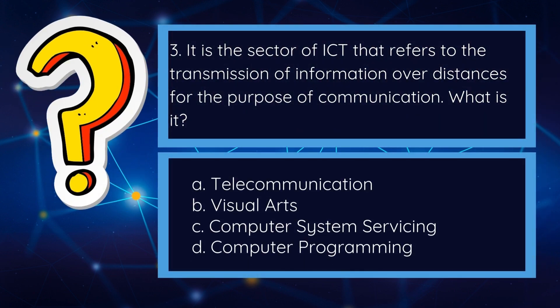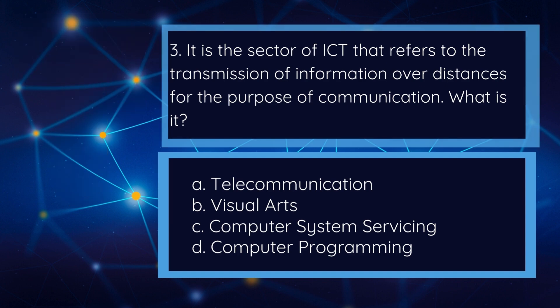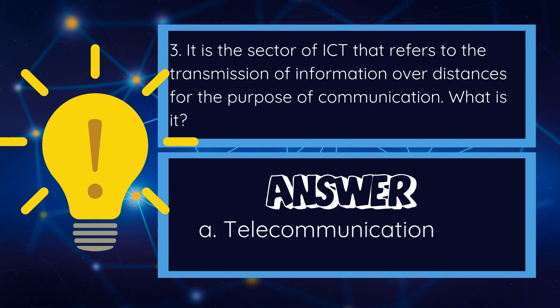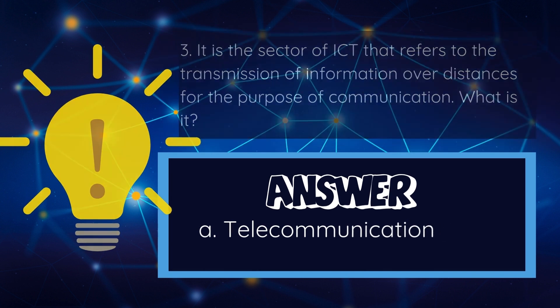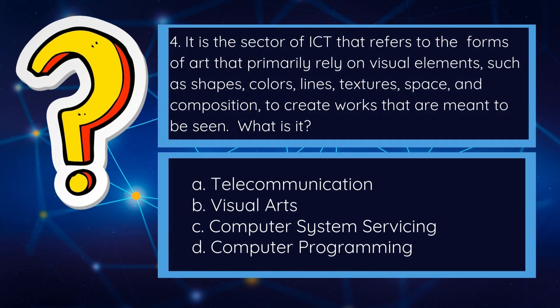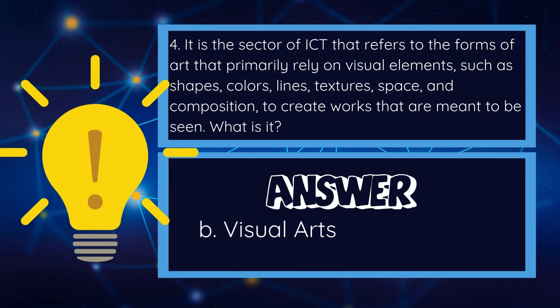Third question: it is the sector of ICT that refers to the transmission of information over distances for the purpose of communication. What is it? a) telecommunication, b) visual arts, c) computer system servicing, or d) computer programming? It is letter A — telecommunication. Fourth question: it is the sector of ICT that refers to forms of art that primarily rely on visual elements such as shapes, colors, lines, textures, space, and composition to create works meant to be seen. What is it? a) telecommunication, b) visual arts, c) computer system servicing, or d) computer programming? Very good — it is b) visual arts.